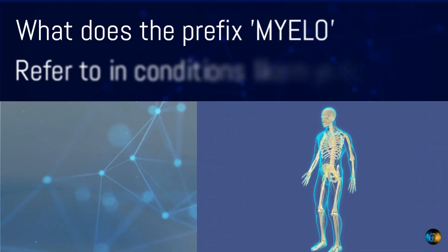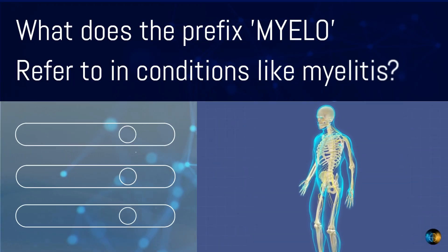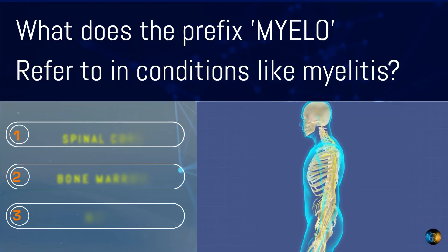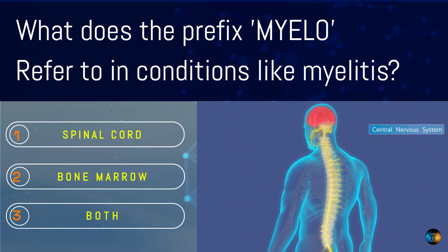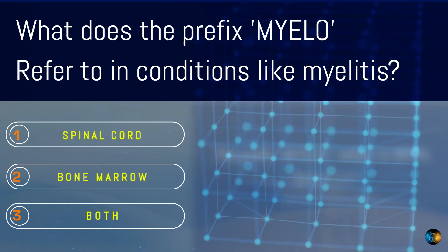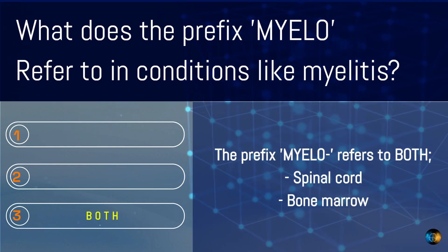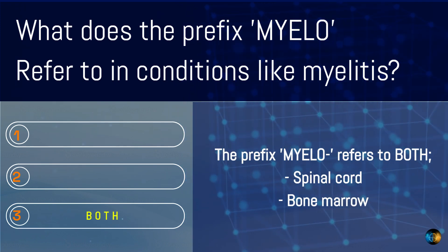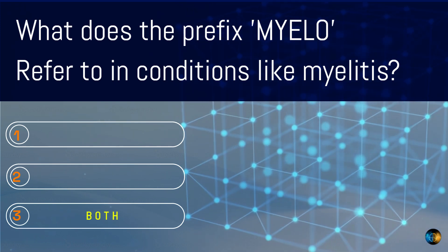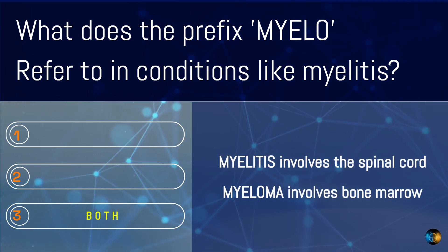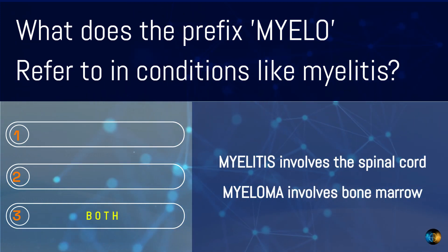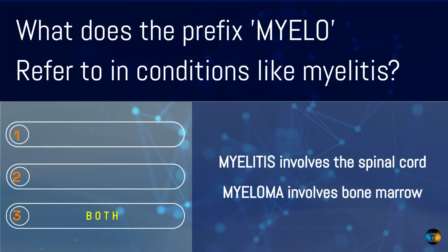What does the prefix 'myelo' refer to in conditions like myelitis — spinal cord, bone marrow, or both? The prefix myelo refers to both the spinal cord and bone marrow. For example, myelitis involves the spinal cord, while myeloma involves bone marrow.